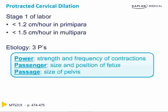The etiology of protracted cervical dilation involves the famous three Ps: power, or the strength and frequency of contractions, which can be assessed with an intrauterine pressure device and Montevideo units; the passenger, meaning the size and position of the fetus, which may be due to macrosomia or weight greater than 4,000 to 4,500 grams, asynclitic head position, extended position causing brow or face presentation, occiput posterior position, or compound presentation; and the passage, or the size of the pelvis, known as cephalopelvic disproportion, assessed with clinical pelvimetry.